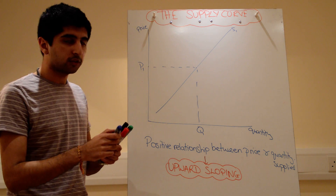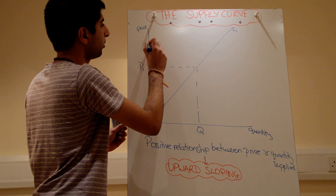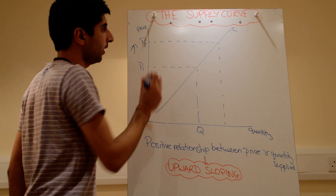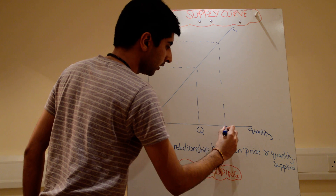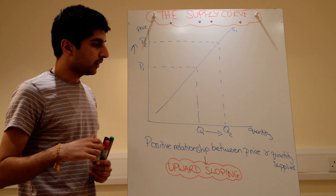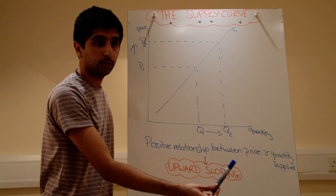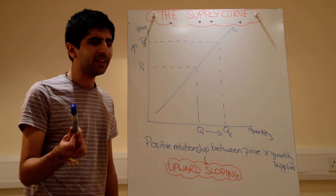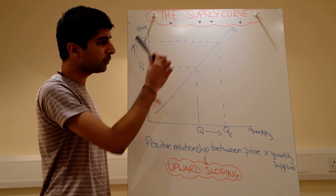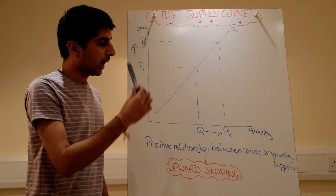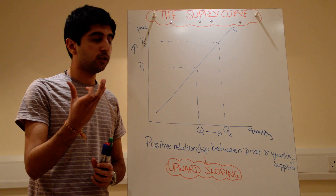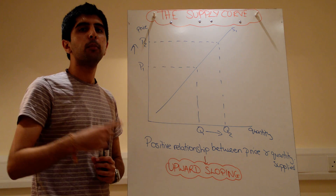But why does that occur? Two key reasons. First, there's a profit motive. When the price goes up from P1 to P2, reading off the supply curve, quantity supplied goes up to Q2. By selling more at a higher price and increasing supply, the profits and revenues generated will also increase. So there's a profit motive for doing so.